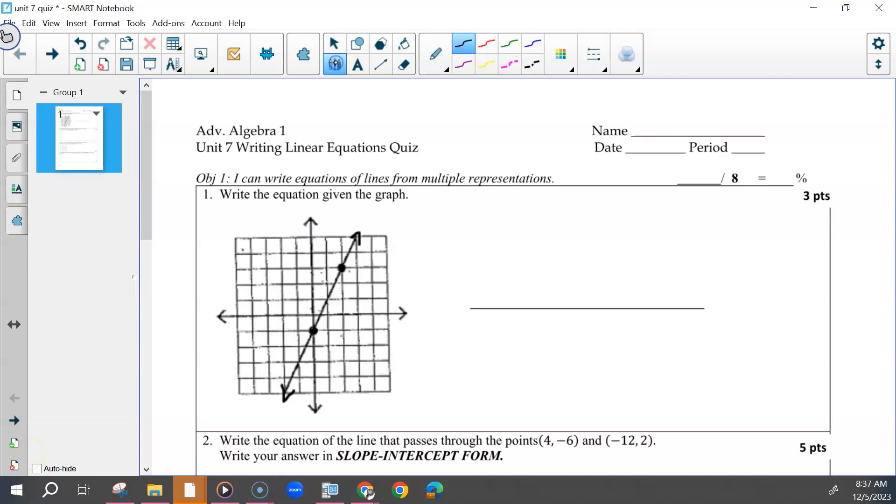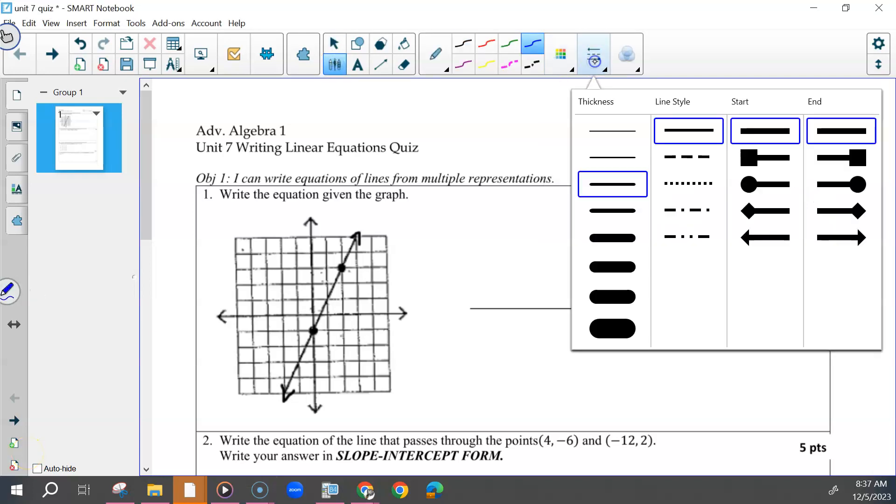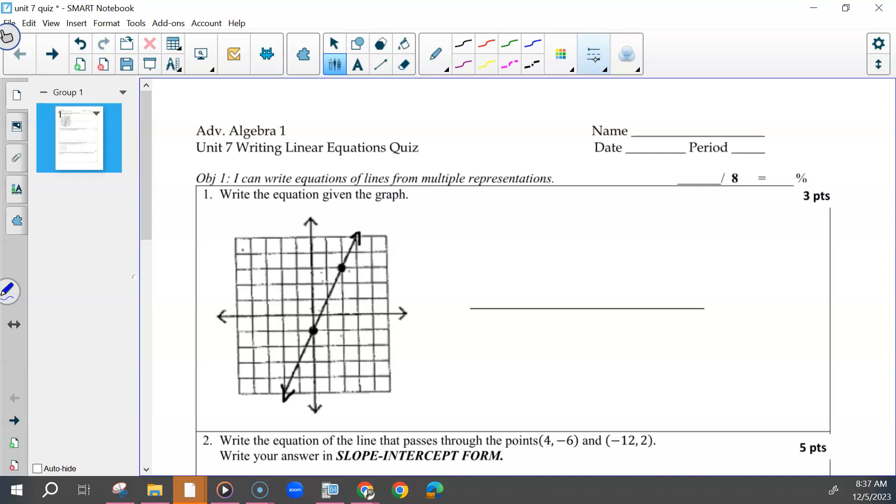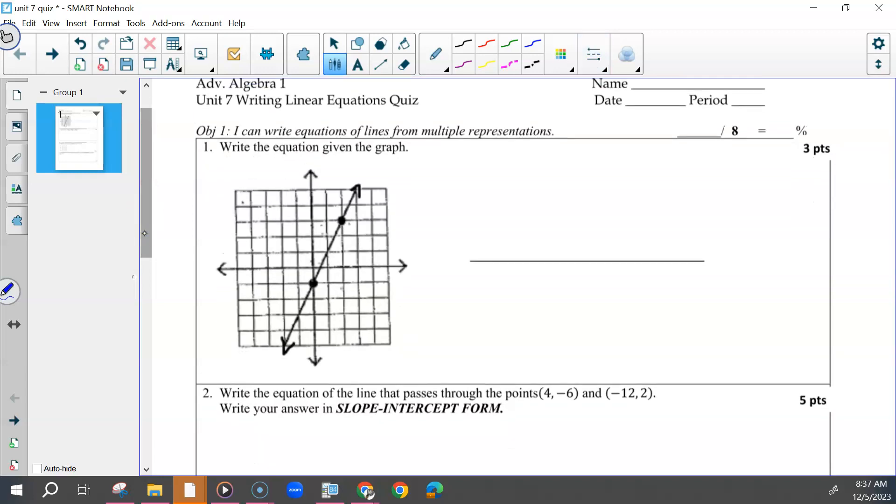Or like, why did I get points off of this thing? For number one, you have to write the equation of the graph. This was y equals 2x minus 1.